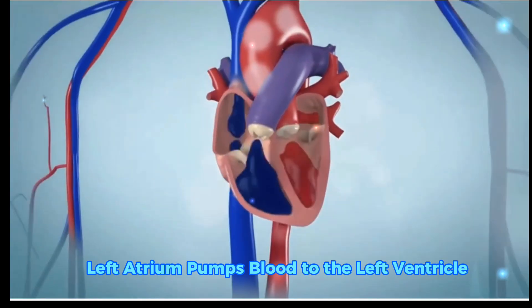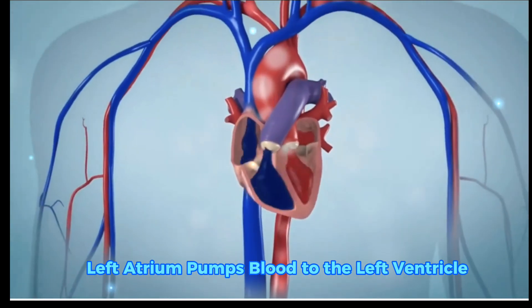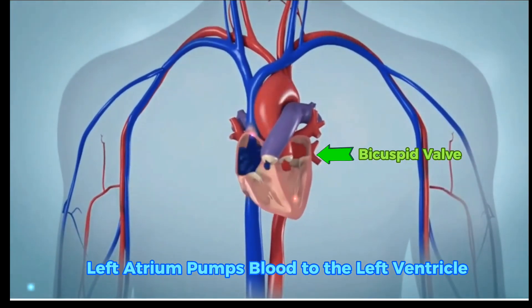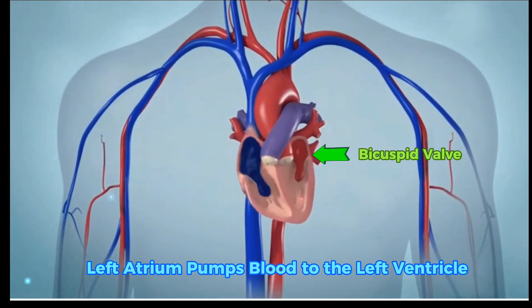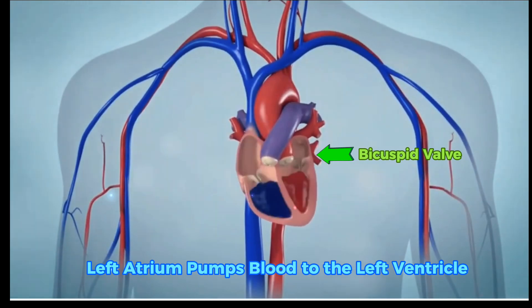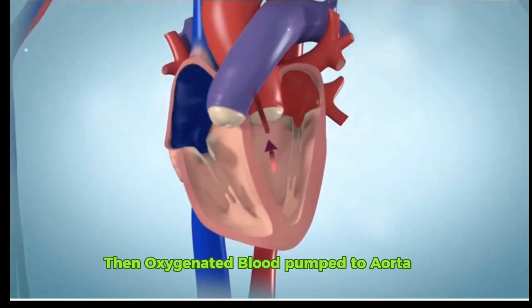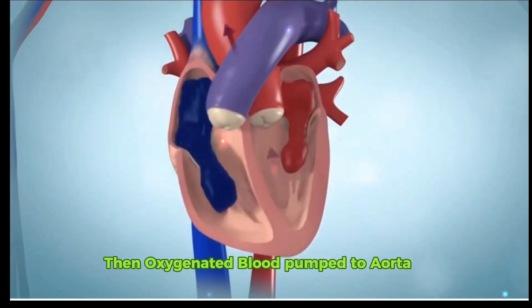Number six: the left atrium pumps blood to the left ventricle through the bicuspid valve. Then oxygenated blood is pumped to the aorta.